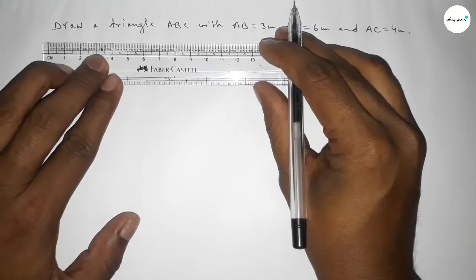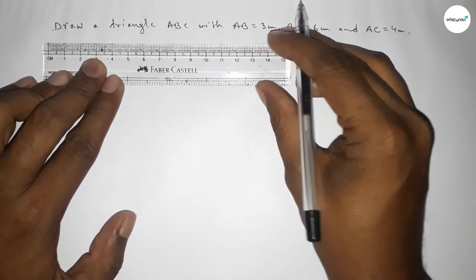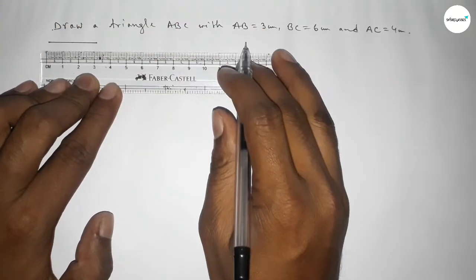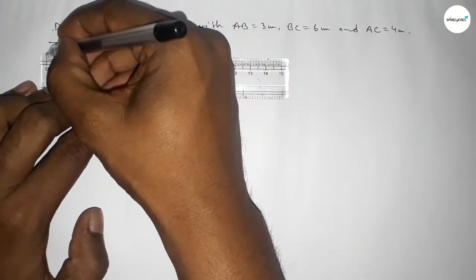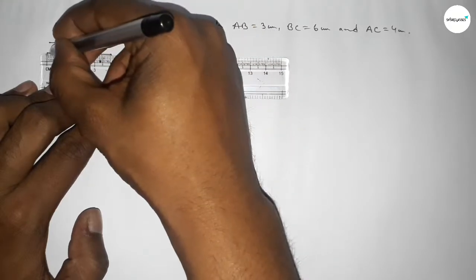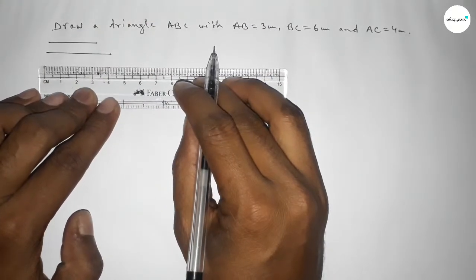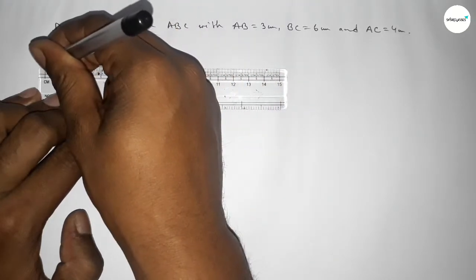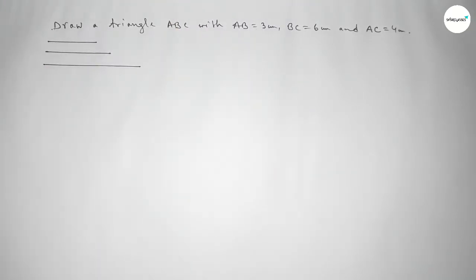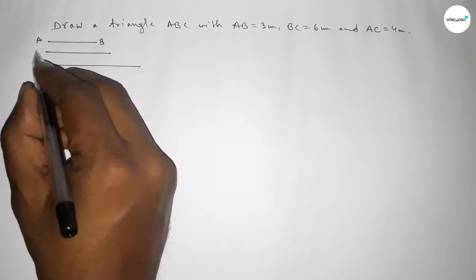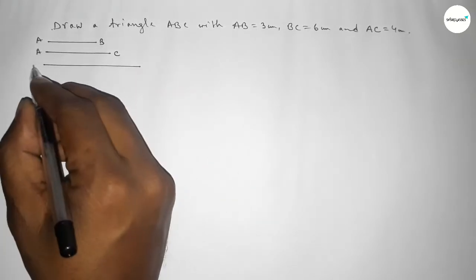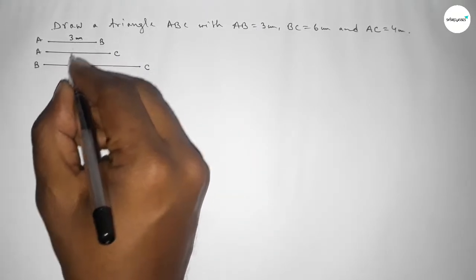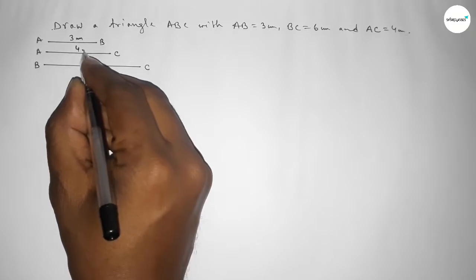First of all, we draw a line of length three centimeters, then another line of length four centimeters, and lastly a line of length six centimeters. This three-centimeter line is AB, the four-centimeter line is AC, and the six-centimeter line is BC.